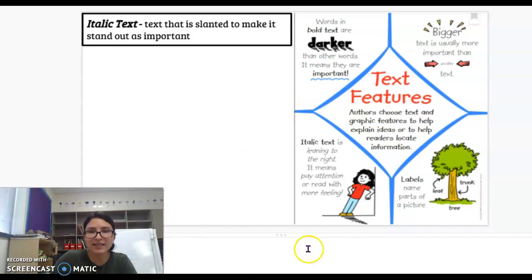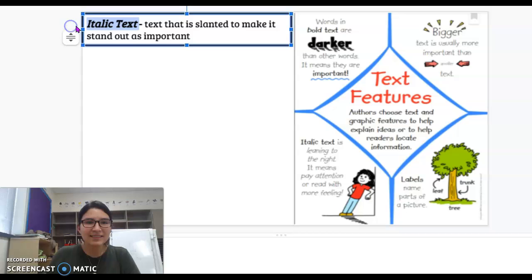And then here's the new text feature. Italic text. Go ahead and say that with me. Italic text. Italic text is leaning to the right. It means pay attention or read with more feeling. So here's an example of italic text. Text that is slanted to make it stand out as important.